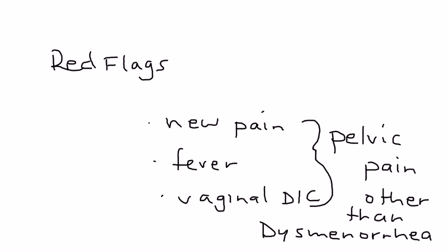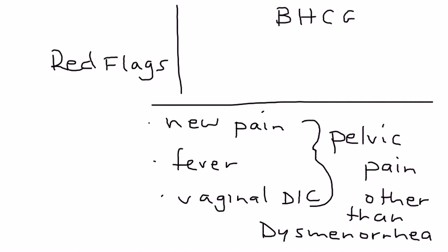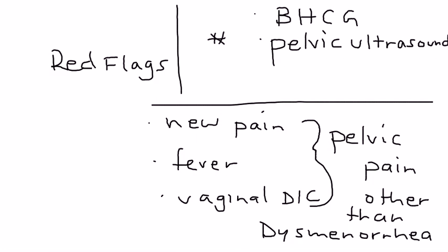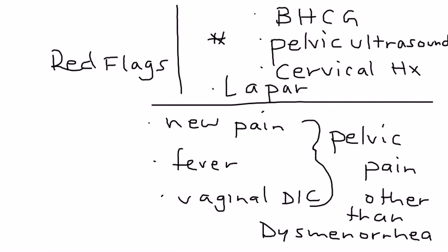Some of the tests that you would do to explore another cause of her pelvic pain would be things like a pregnancy test — perhaps you're looking for an ectopic pregnancy. Pelvic ultrasound is a very important test that can tell you so many things, such as pelvic masses or uterine fibroids. Cervical cultures, also, if you're exploring something other than dysmenorrhea, can guide you to perhaps an infection. And then when you really can't find a reason for her pelvic pain, you do a laparoscopy, which allows you to directly visualize what's going on in her pelvic organs.